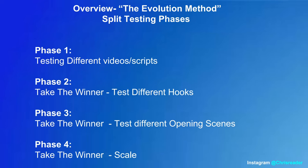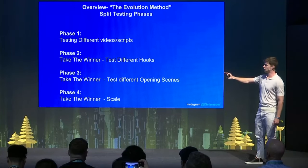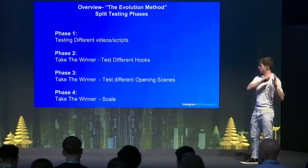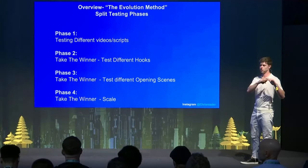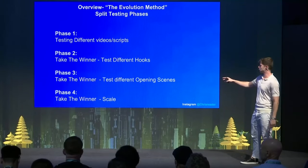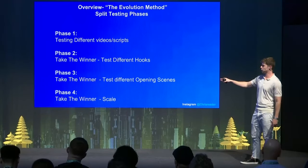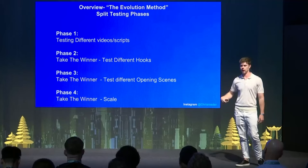Now I'm going to go over the overview of the Evolution Method. It's basically got four phases. Phase one is testing different videos and scripts. Phase two is taking the winner video and script and testing different hooks. Phase three is taking the winner of phase two and testing different opening scenes. Phase four is taking the winner of that and scaling it.